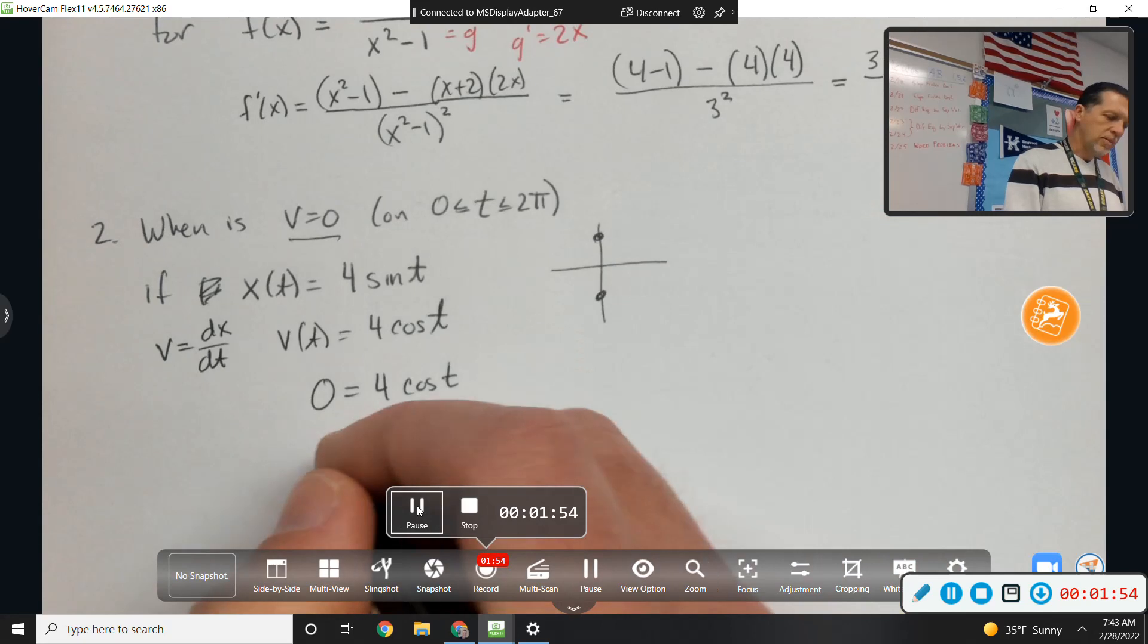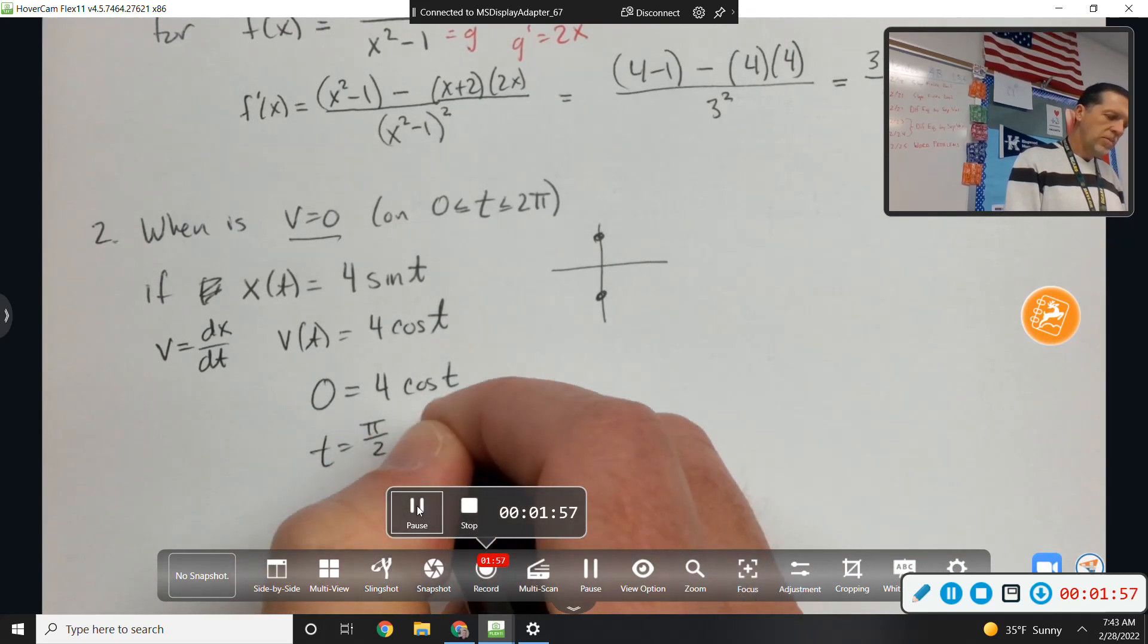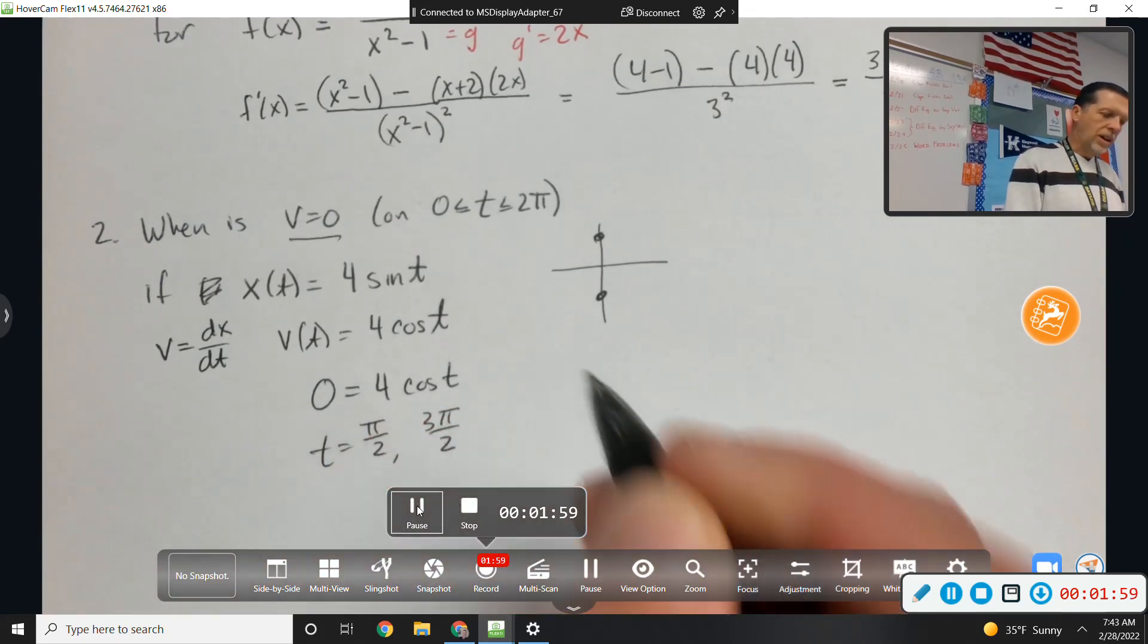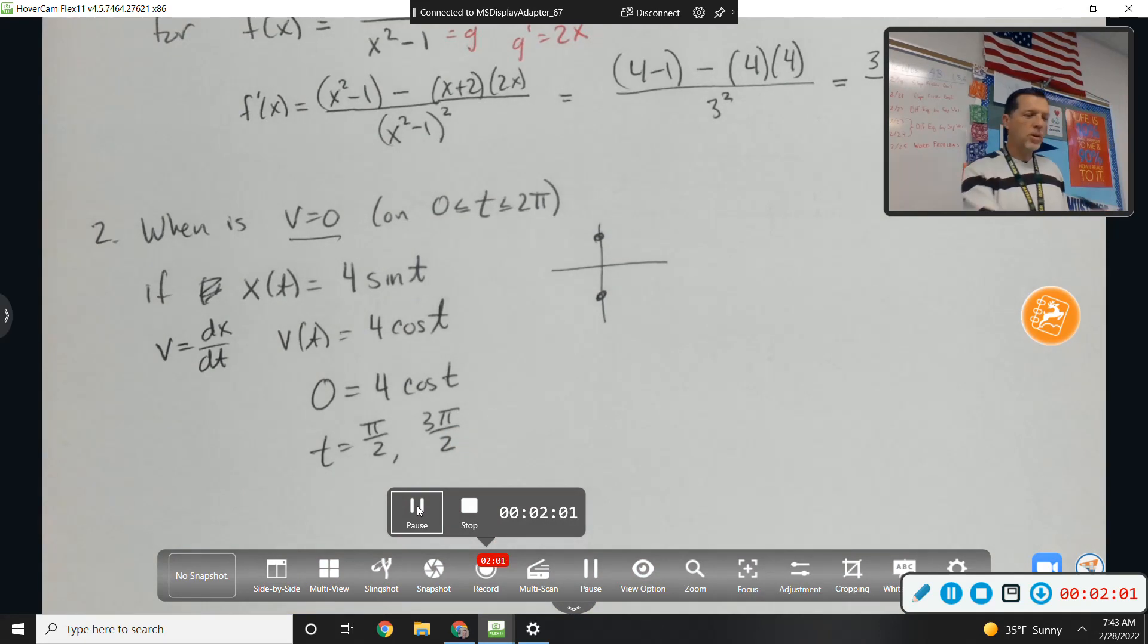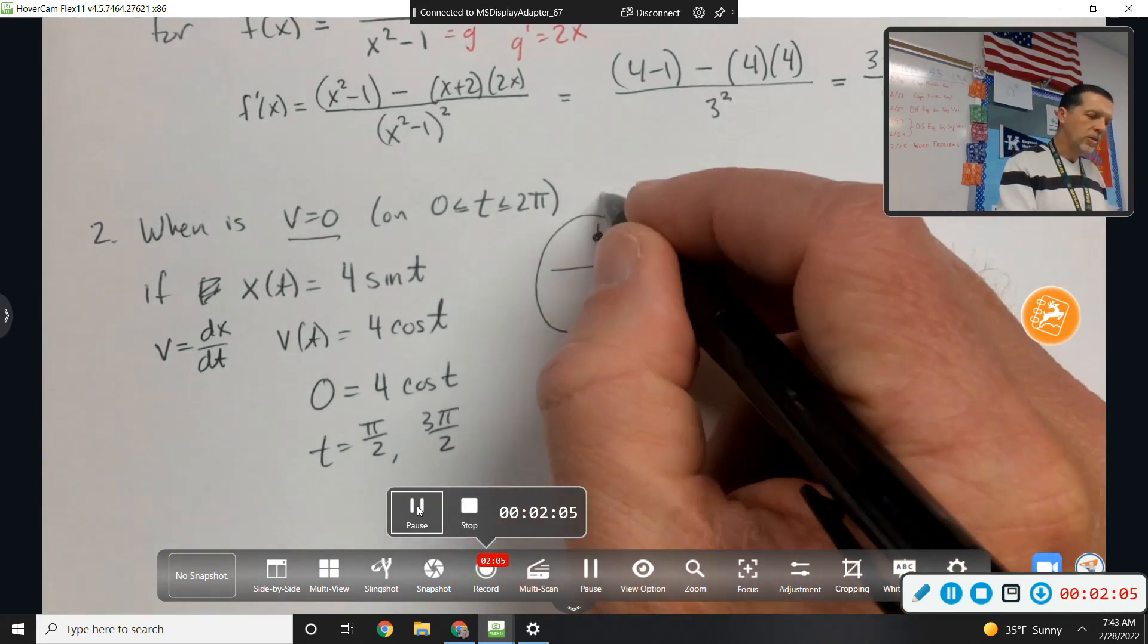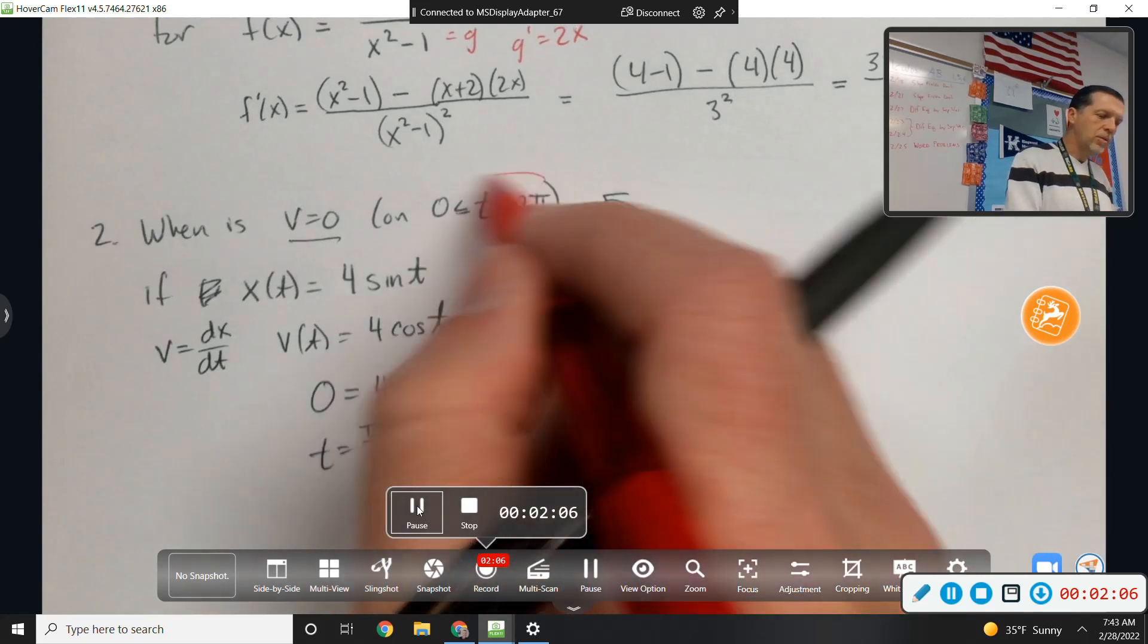Yeah, the top and the bottom. So pi over 2, 3 pi over 2. And obviously infinitely many more, depending on how you want to get there or if you want to circle around once or twice. But it said between 0 and 2 pi.